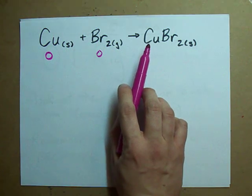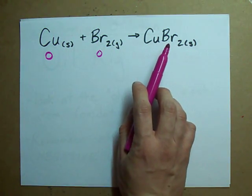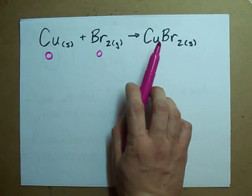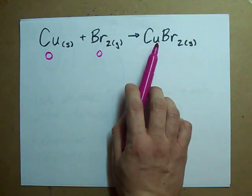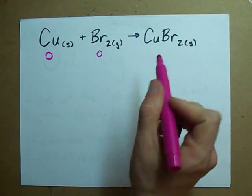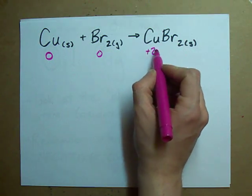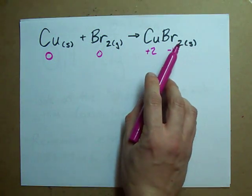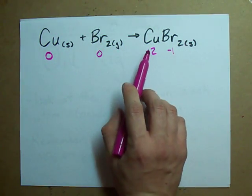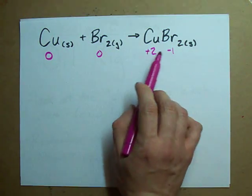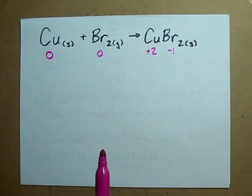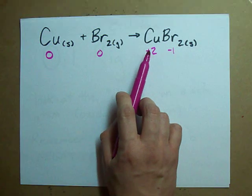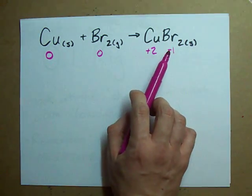In this compound, though, I've got my copper bonded to two bromines. When copper and bromine are in a chemical like this, it's called an ionic compound. The copper in this case wants to have a charge of plus two, and each of the bromines wants to have a charge of minus one. Notice I have two atoms that have a charge of minus one and one atom that has a charge of plus two, so the charges cancel each other out. The ions that make up this ionic compound are the copper 2+ ion and bromide ions, which have charges of minus one.